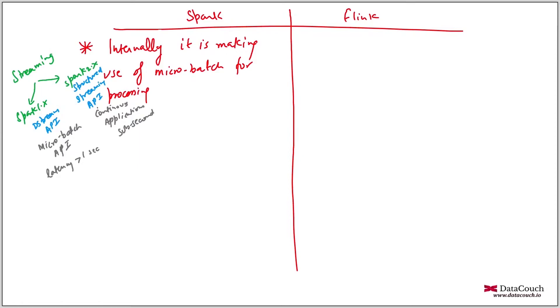Apart from that, in Flink, we have the compute model which is based on operators. When I say operator, it is basically true event streaming. Even batch is also a special case of streaming.